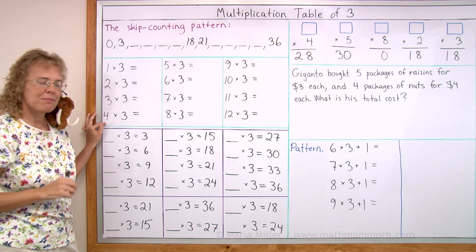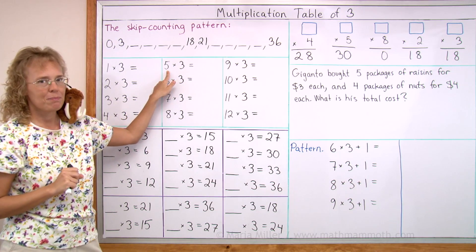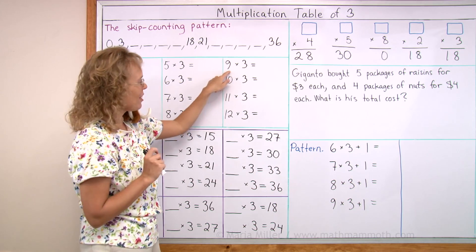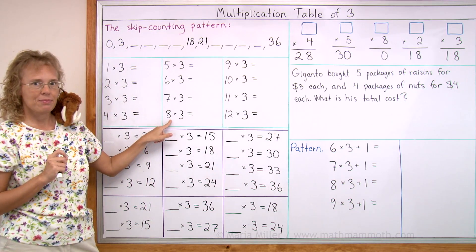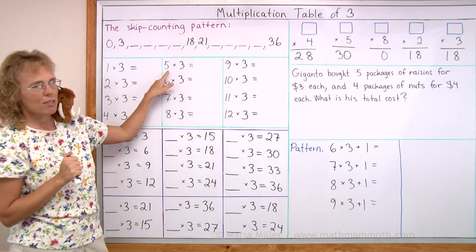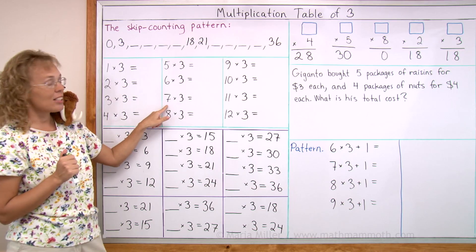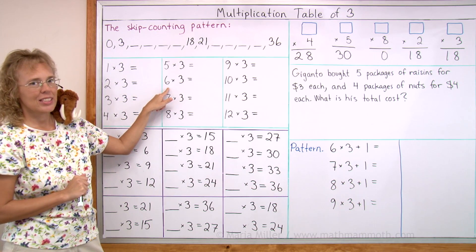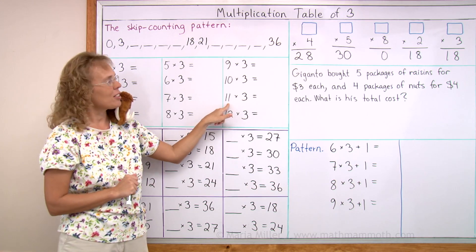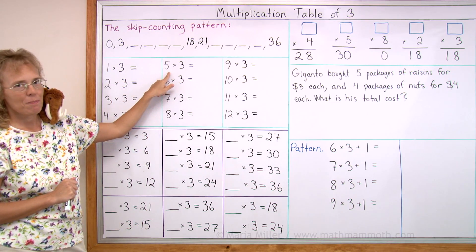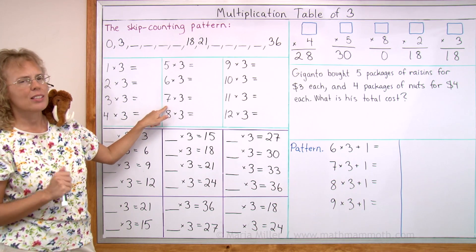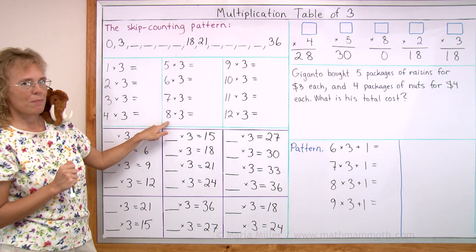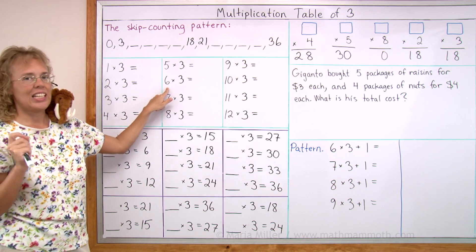4 times 3 is 12. 5 times 3? 15. 10 times 3? 30. 9 times 3? Just 3 less — 27. 8 times 3? It's 24. 5 times 3? 15. And 7 times 3? This is the difficult one — 21. 6 times 3? 18. 11 times 3? 33. 5 times 3? 15. 7 times 3? 21. 9 times 3? 27. 8 times 3? 24. And 6 times 3? 18.